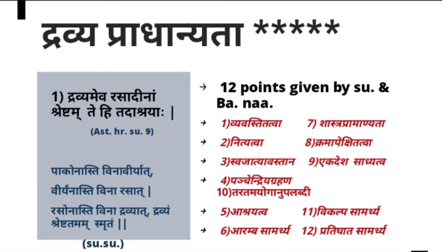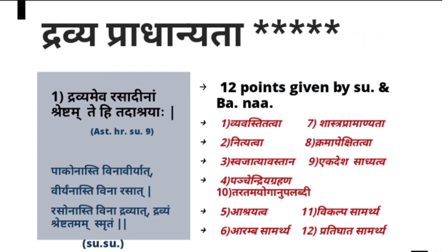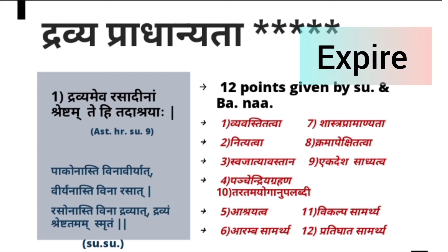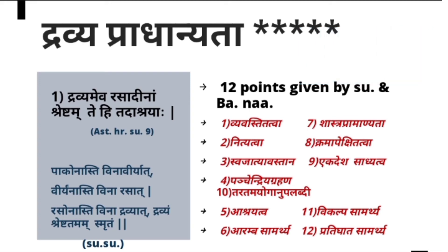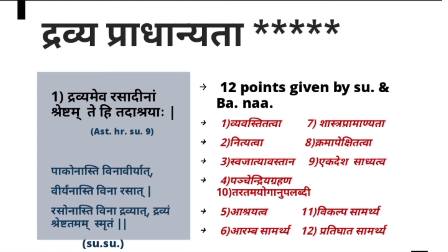The second point is Nityatva — eternal or evergreen quality. Dravya is considered Nitya but not the Gunas. For example, a Saviriyata Dravya can lose its Virya — the Virya present in a Dravya can vanish — but the Dravya itself remains. The third point is Svajatyavastitha — specificity. Parthivadi Gunas never loosen in Dravya even under the influence of many kinds of Kala.